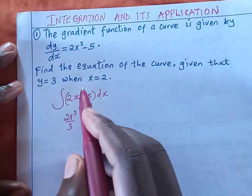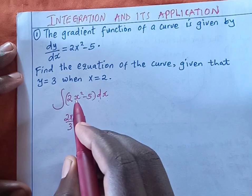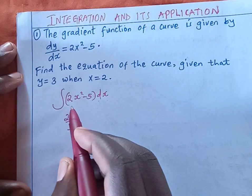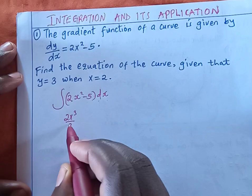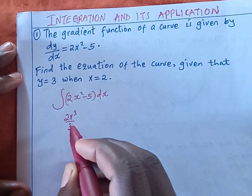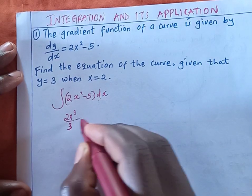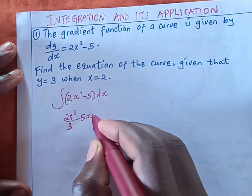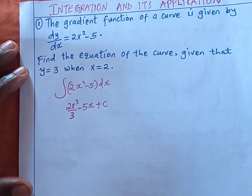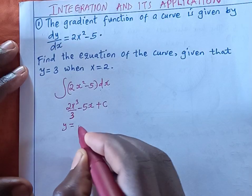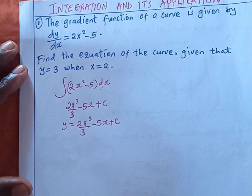Under integration, we are going to increase the powers. We have x raised to power 2, so we increase the power by one, and the result we divide by that value. We end up getting 2x raised to power 3, then we divide by 3 — the power we obtained after increasing the power of x — then minus 5x, plus c. We end up saying that y equals 2x cubed over 3, minus 5x, plus c.